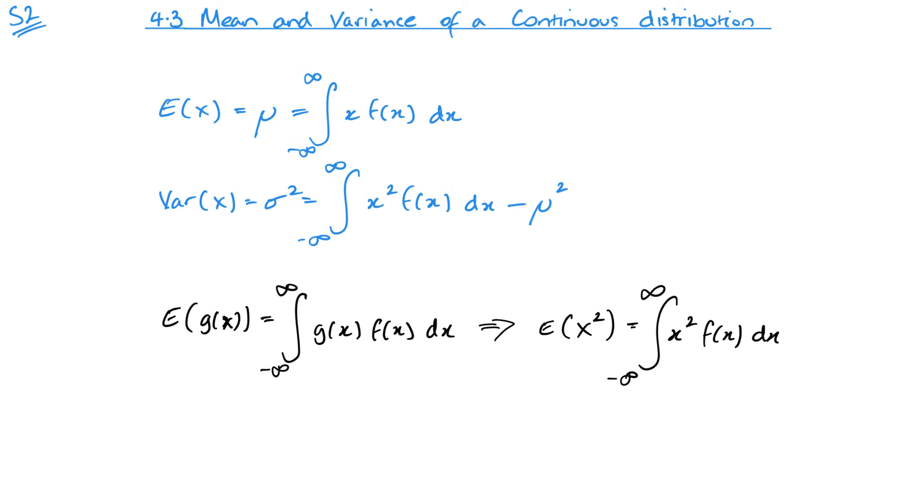There is one additional bit to kind of take note of. If I had E of a function, say g of x, then what I would get is that g of x multiplied by f of x. What that really leads on to is if I want to find E of x squared, that then gives me x squared times my function. That's effectively just this part of the variance.